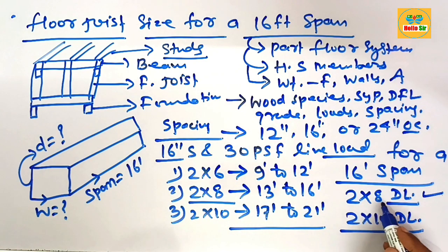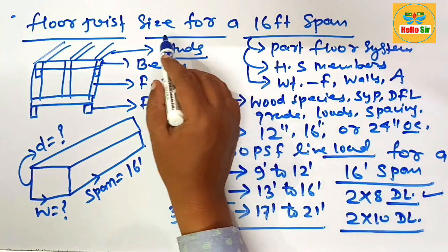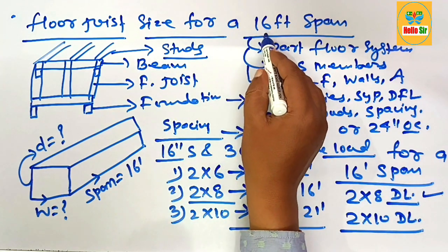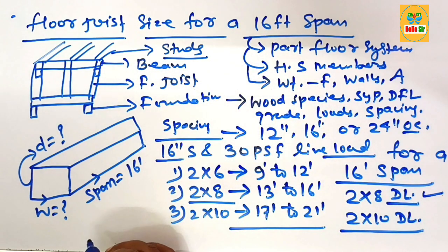So you can use either 2x8 dimensional lumber or 2x10 dimensional lumber as floor joist for a span length of 16 feet. Thank you.